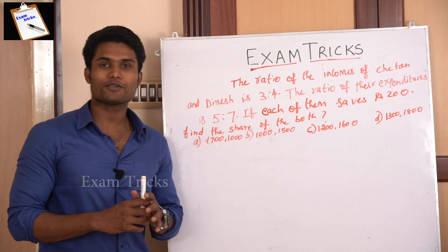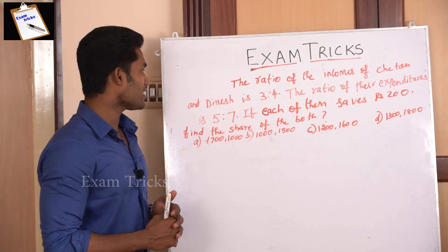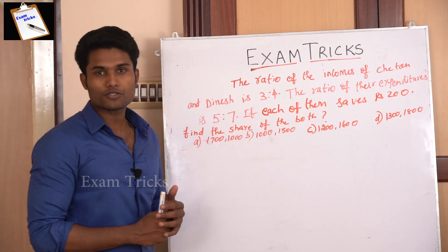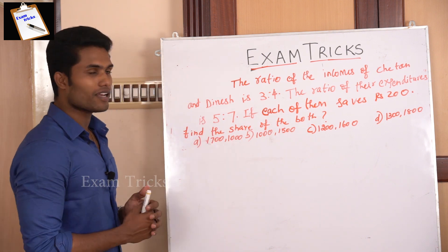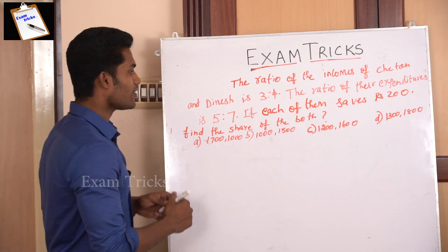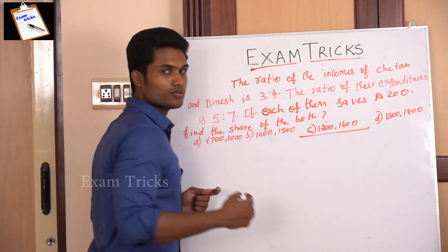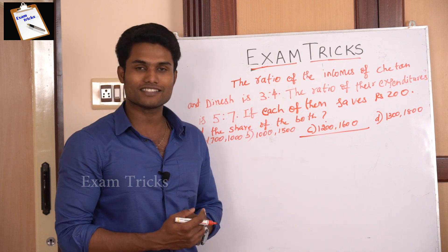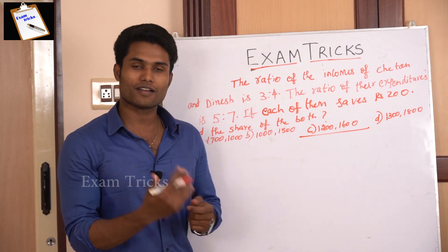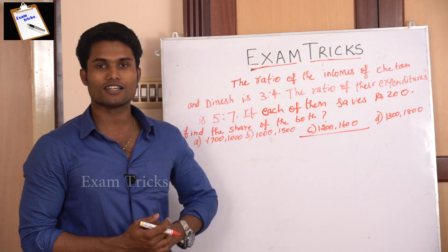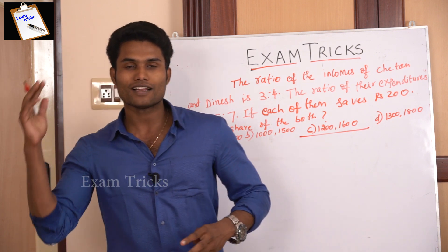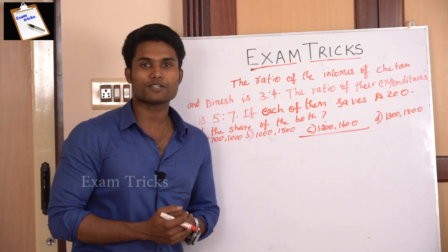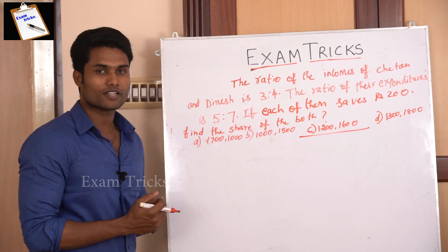Railway exam question: the ratio of the income of Chetan and Dinesh is 3 to 4. This is an aptitude question and we will answer it — the answer is option C — in 2 seconds. Welcome to our channel Exam Tricks. I am Kanish Kumar, your aptitude trainer. Let's get into today's video.